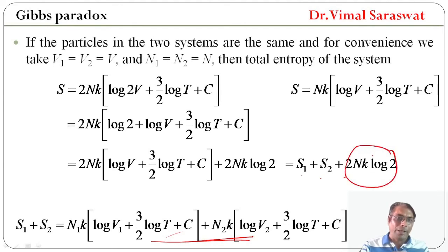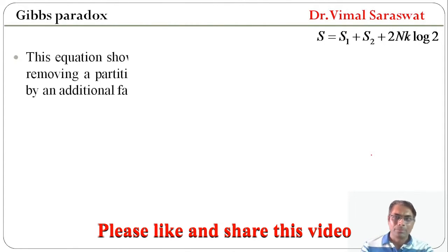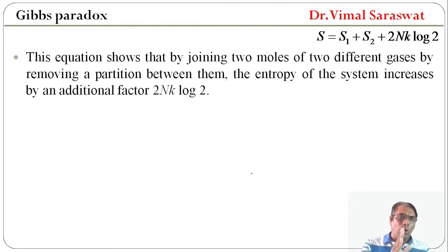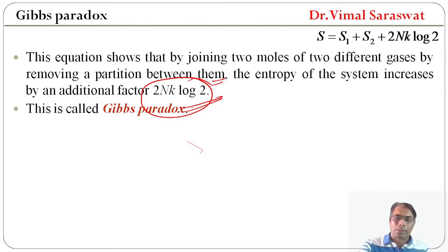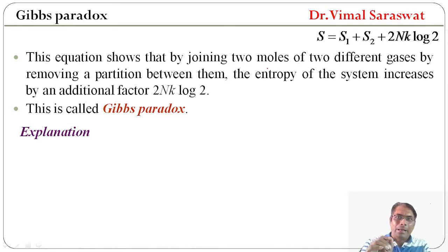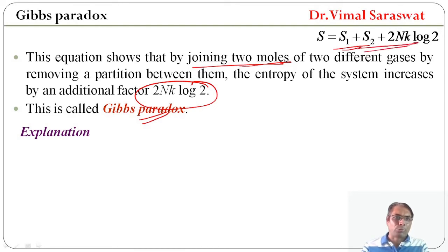This shows that by joining two moles of two different gases by removing a partition between them, the entropy of the system increases by an additional factor 2NK·log 2. The actual entropy should be S = S1 + S2, but here we get S = S1 + S2 + 2NK·log 2. This additional factor is our Gibbs Paradox.